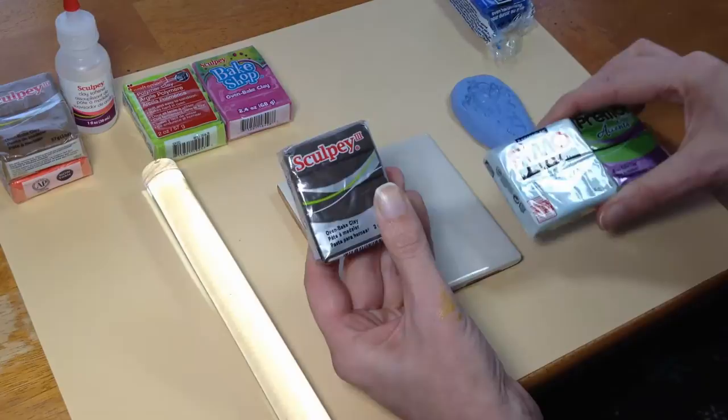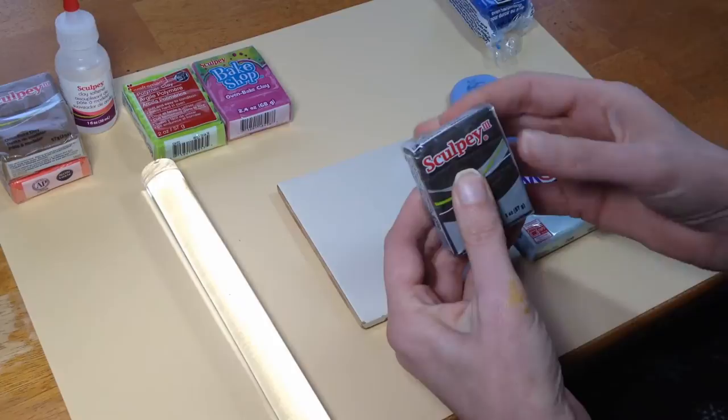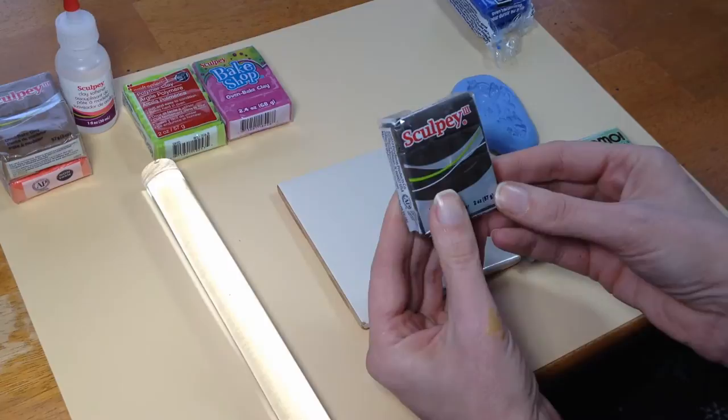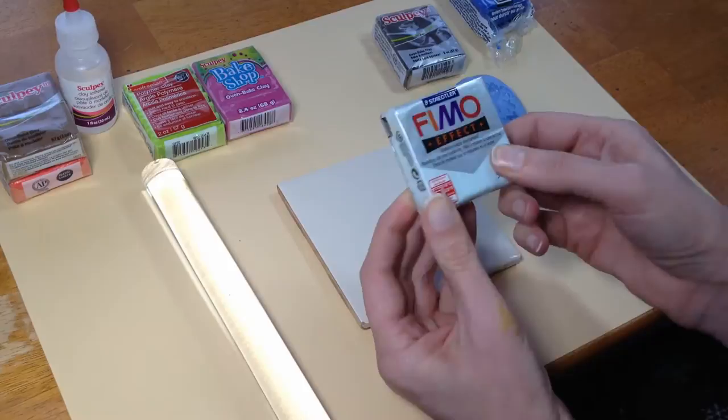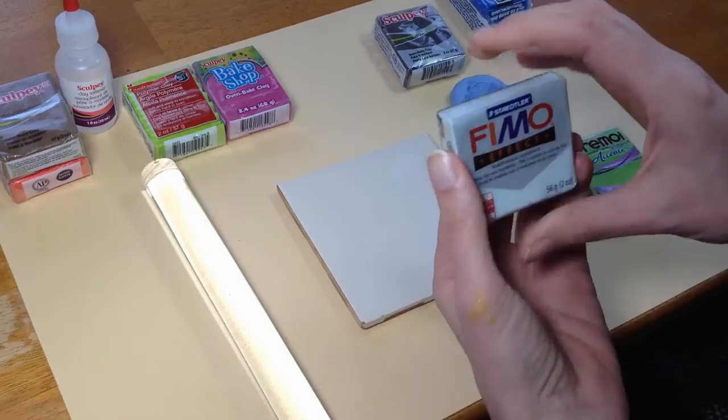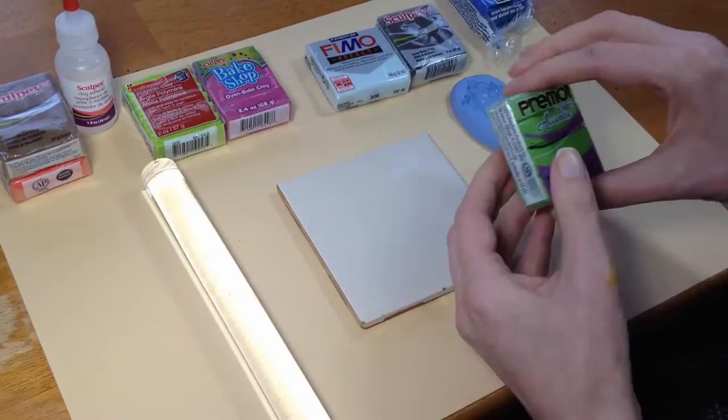So the Sculpey 3 is probably what most people start to sculpt with. A lot of times the Sculpey 3 is pretty soft. This is a pretty old packet so it's nice and firm. This is a good balance of cost and workability. It's at my craft store about $2.39 for a pack. The Fimo is a little more expensive. It's $2.79. They have a soft version and this regular version. You can see as I'm pinching it, it's pretty firm and I just bought this pack because I don't actually use Fimo that often.